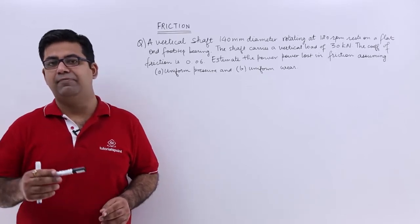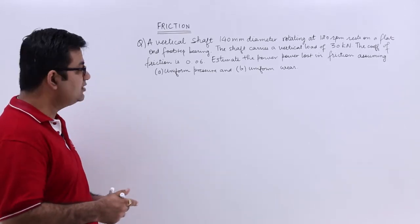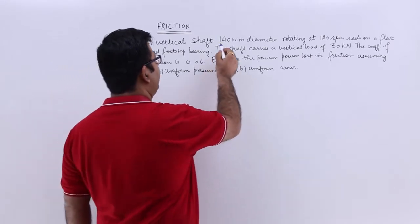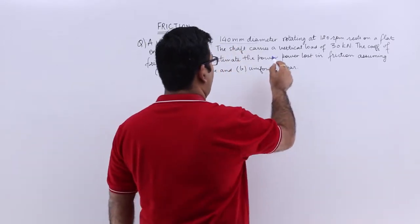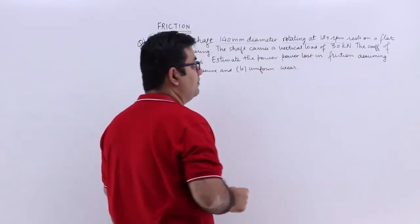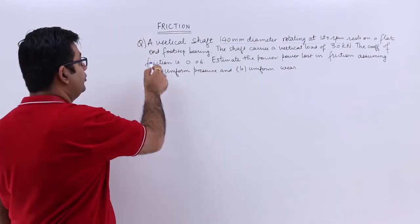Let's look at a question on flat pivot bearing. The question says, a vertical shaft 140 mm diameter, rotating at 120 rpm rests on a flat end footstep bearing.